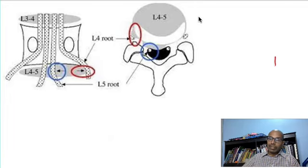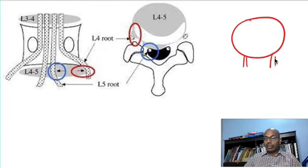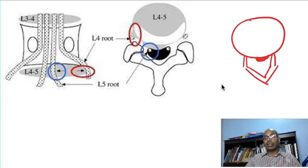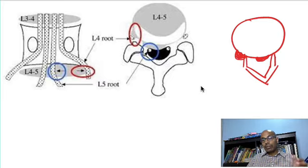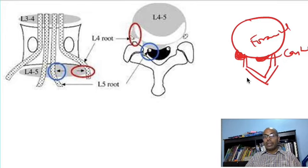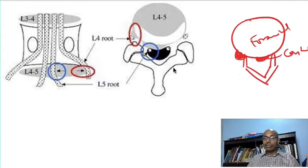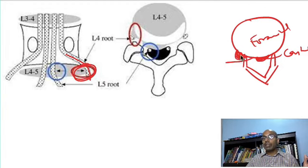One important concept in disc prolapse that you must understand is central disc prolapse and foraminal disc prolapse. Let us say this is an axial cut of the vertebrae, then you have the pedicle here and the lamina. If the disc prolapses from the central side it is called central disc prolapse. If it bulges out on the side and presses on the foramen and nerve, this is called foraminal disc bulge. The nerve that exits the L4 L5 vertebrae exits below L4. The L4 nerve travels in an acute fashion and gets pressed by the foraminal disc prolapse.